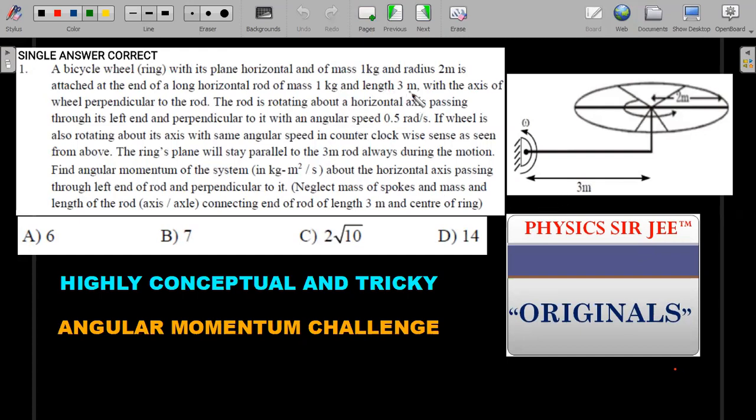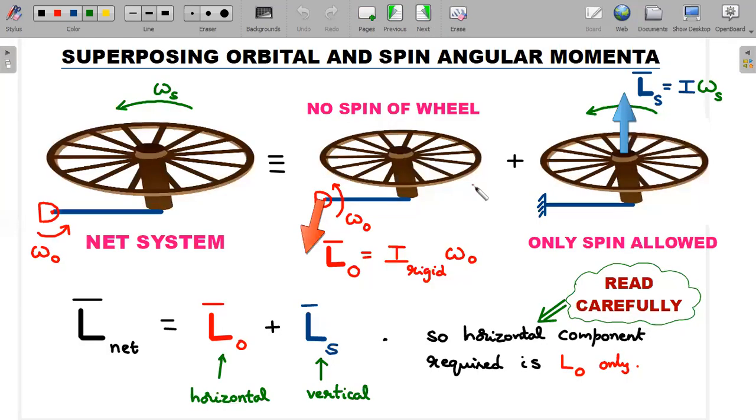I hope you have read through each and every wording of this question carefully. A lot of things on the board might scare you, especially if you're a beginner in this topic, so I would request you to calm down and try to follow my lead. We are going to use a situation of superposing the orbital and spin angular momentum.